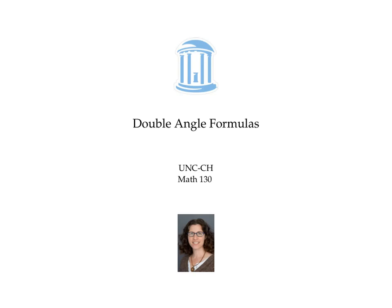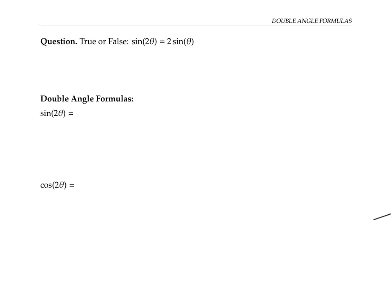This video gives formulas for sine of two theta and cosine of two theta. Please pause the video and see if you think this equation, sine of two theta equals two sine theta, is true or false. Remember that true means always true for all values of theta, where false means sometimes or always false. This equation is false because it's not true for all values of theta.